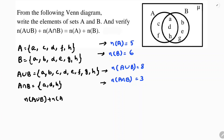Now we verify: n(A∪B) plus n(A∩B) equals n(A) plus n(B). The number of elements in A∪B is 8, plus A∩B which is 3, equals n(A) which is 5, plus n(B) which is 6. So 11 equals 11. In this way we verify the formula.